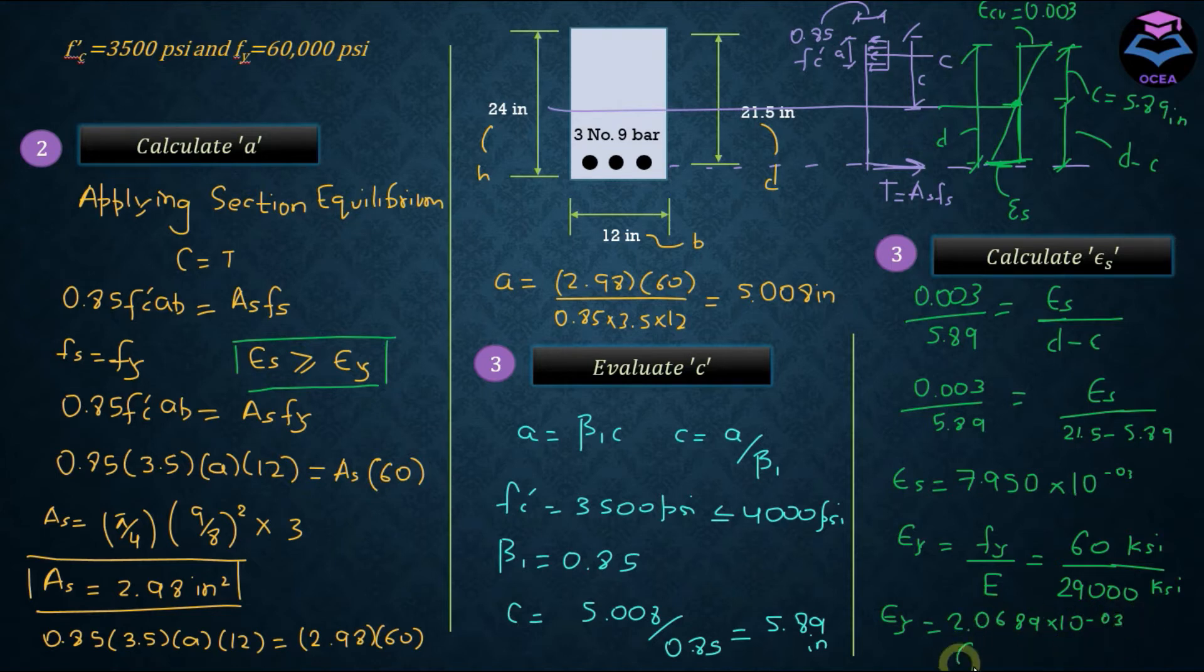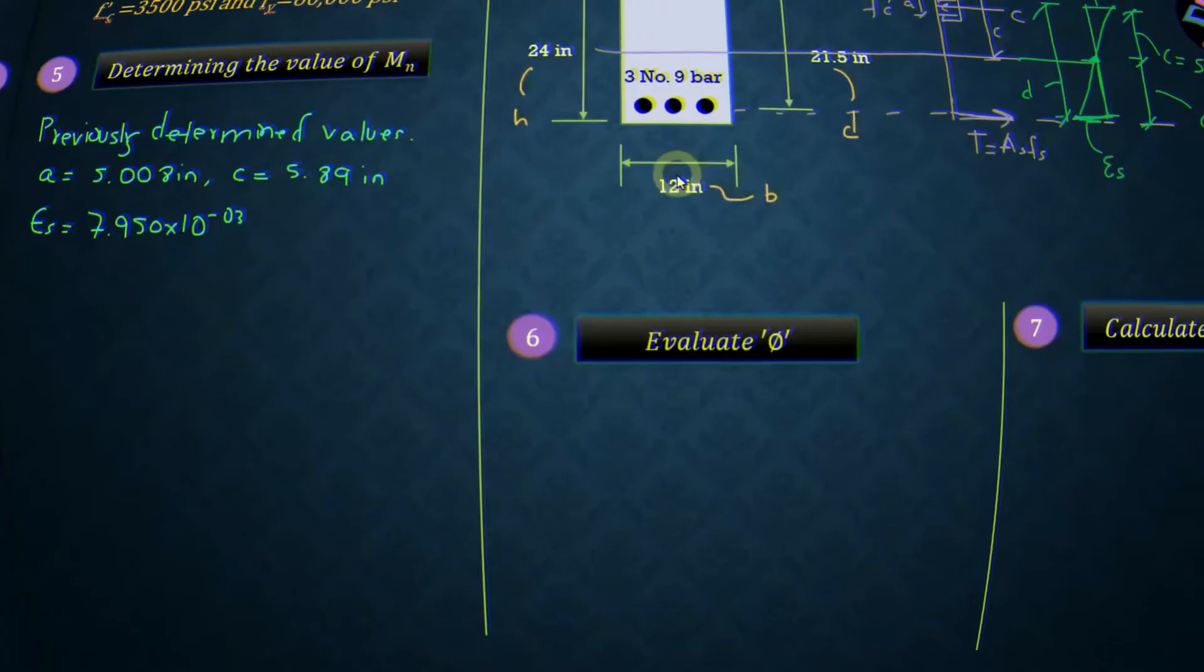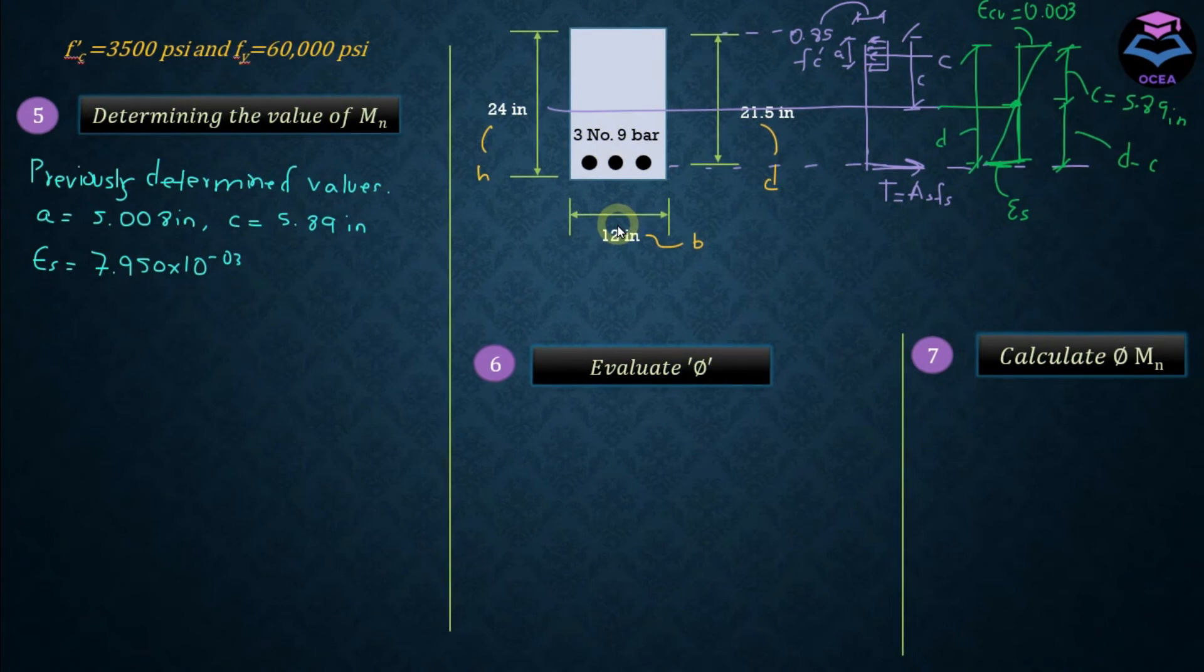And since we can see here that strain in steel is greater than the yield strain of steel, it means that the assumption that we had taken in the second step to calculate the value of a, that is the depth of compressive stress block, is correct. Now let's move on to the next step.